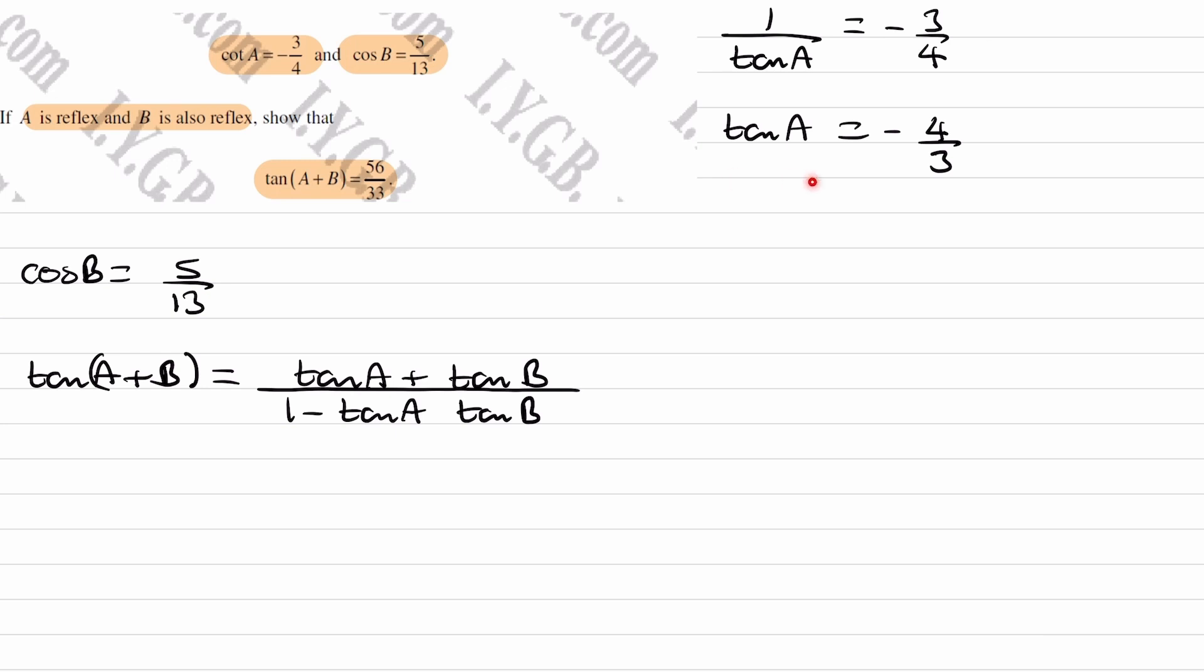We have tan A, we don't have tan B, but we do have cos B, which is equal to 5 over 13. So a quick way that you can work out what tan B is is to consider a right-angled triangle, where let's say this angle here is angle B.